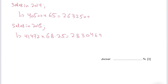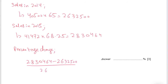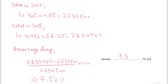To calculate the percentage change: take the new value of 2,830,464 minus the old value of 2,632,500, divided by the old value of 2,632,500, then multiply by 100. Putting this into the calculator — 2,830,464 minus 2,632,500, divided by 2,632,500, multiplied by 100 — the percentage change we get is 7.52%, which is our final answer.